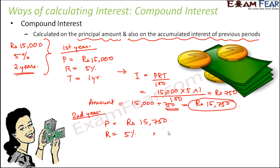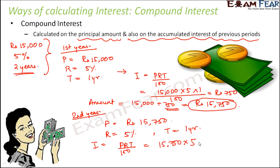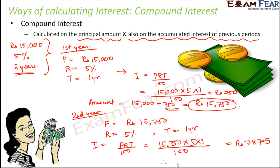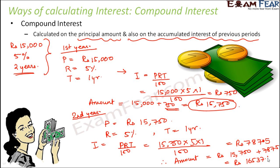The rate of interest still remains 5% and the time period is again one year. Using P × R × T ÷ 100, the interest for the second year is 15,750 × 5 × 1 ÷ 100, which comes out to be Rs. 787.50. Therefore, the total amount at the end of the second year is Rs. 15,750 plus Rs. 787.50, which equals Rs. 16,537.50.